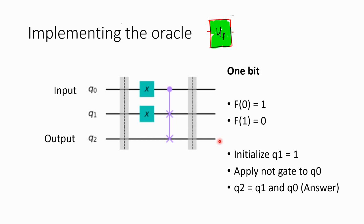But there is one caveat: q0 and q1's initial state is completely changed at the output bits. Because of these gates in the circuit which act upon q0 and q1, the value of q0 and q1 at the output is not the same as at the input.